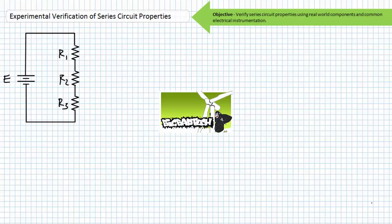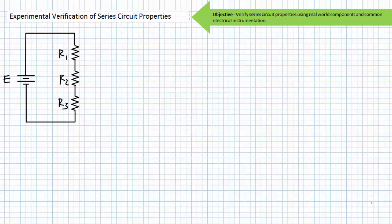This activity ties together a number of topics including basic series circuit properties, Kirchhoff's voltage law, the voltage divider rule, and switches, in addition to all prerequisites from the previous experimental verification of Ohm's law lecture. If you've been following this playlist in its intended sequence or are already familiar with these topics, no worries. If not, I recommend hitting the prerequisite lectures at the Big Bad Tech channel. This activity is especially exciting because it represents a synthesis of topics and demonstrates that these properties are real, verifiable, and extremely useful tools.